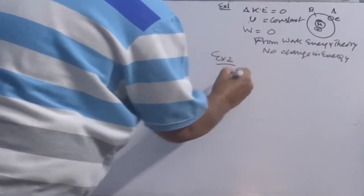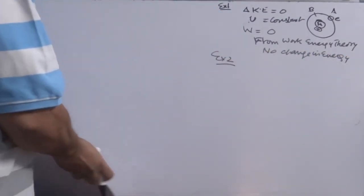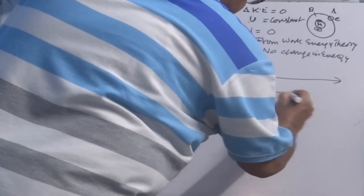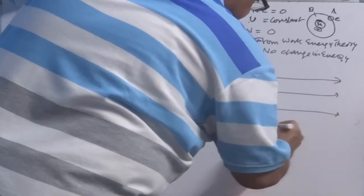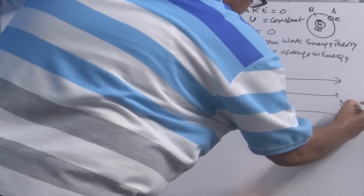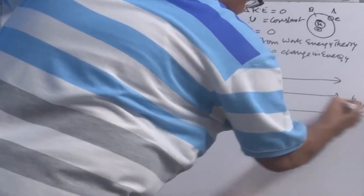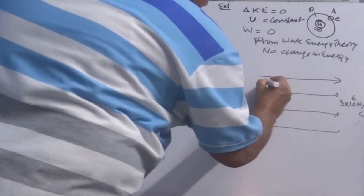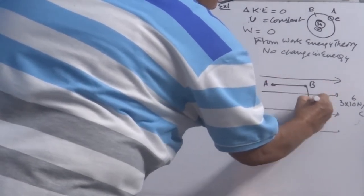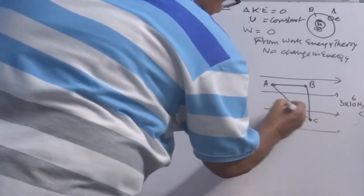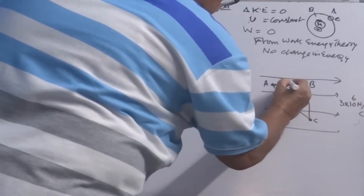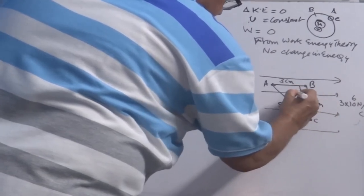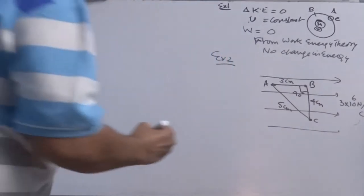Let's do quickly exercise 2. What does it do exercise 2. There is a uniform electric field. Strength 3 into 10 to the power 6 Newton per coulomb. A charge of 2 micro coulomb is moved from A to B, then B to C, then C to A. This is 3 cm, this is 4 cm, this is 5 cm, this is 90 degree.